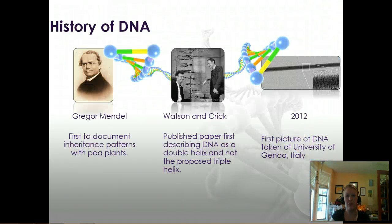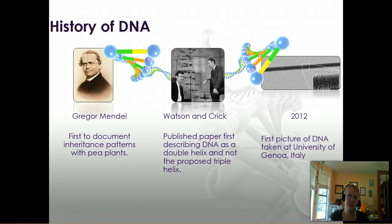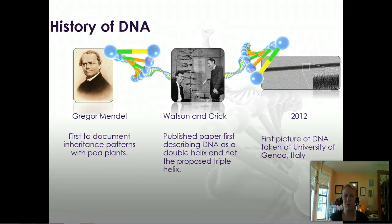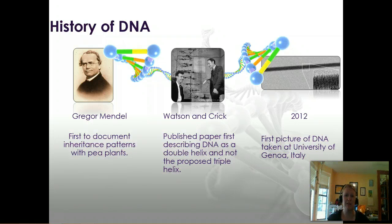Let's talk a little about the history of DNA. Hopefully you've heard about these figures from your previous classes. The first to really document inheritance patterns was Gregor Mendel. We knew for a while that people look like their parents, but Mendel was the first to work out how inheritance patterns actually function — at least the most basic ones. However, he didn't know that DNA was what passed it on; he just knew that something was being passed from parent to offspring.